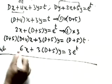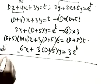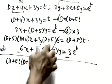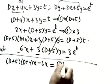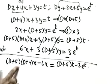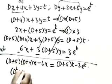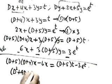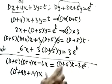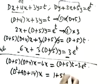After subtracting, the y terms cancel. What remains is: (D + 5)(D + 4)x − 6x = (D + 5)t − 3e^t. Expanding and collecting x terms: D² + 9D + 20 − 6 = D² + 9D + 14, so (D² + 9D + 14)x = (D + 5)t − 3e^t. Since d/dt of t = 1, the right-hand side becomes 1 + 5t − 3e^t.